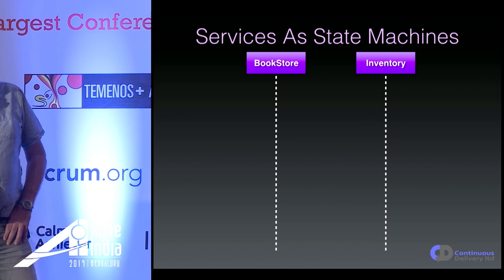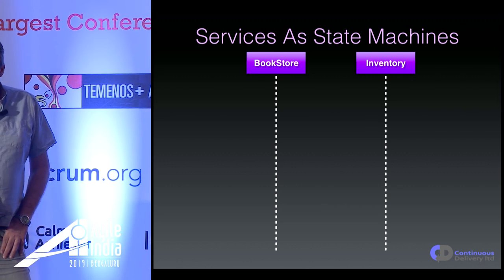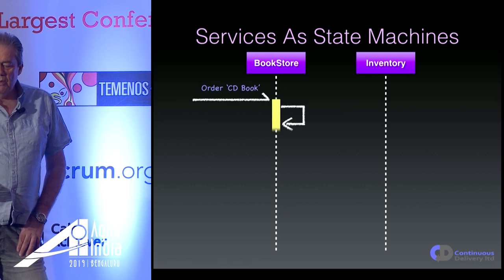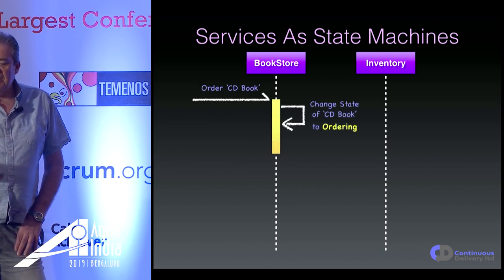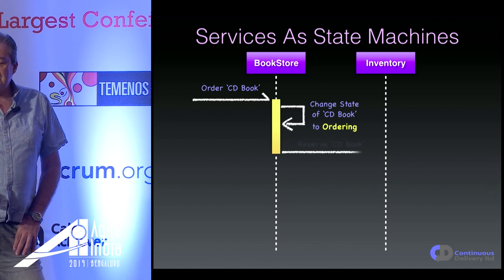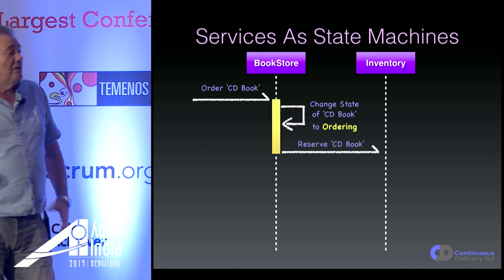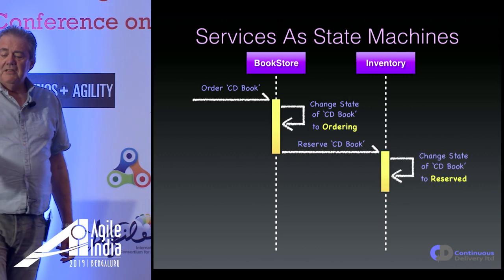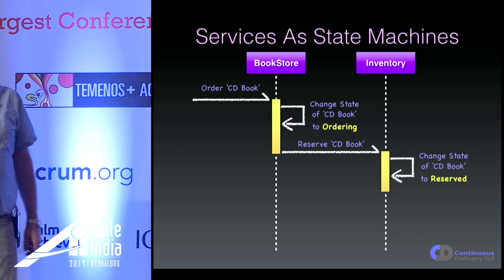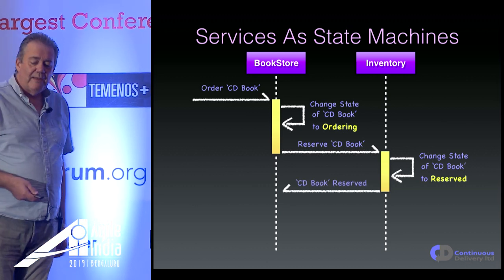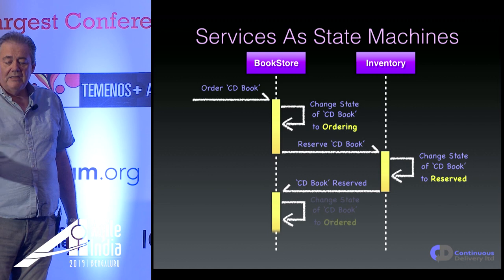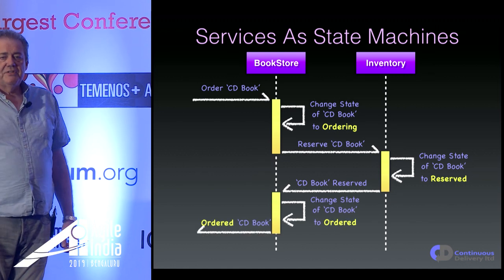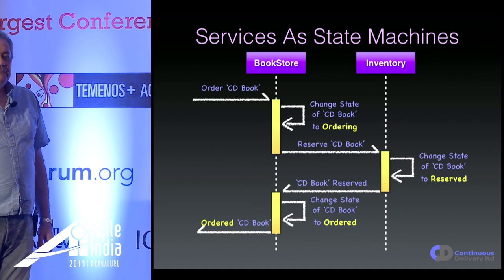Let's walk through the example again. Here's the bookstore — we order the Continuous Delivery book. That does some processing, changes the state of the book to 'ordering', and forwards the message to reserve the book in inventory. That does some processing, changes state to 'reserved' in the inventory, sends a message back saying the book's reserved. The bookstore changes the state to 'ordered' and can forward the message saying the book's been ordered.